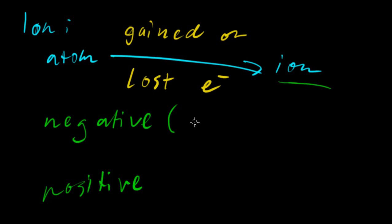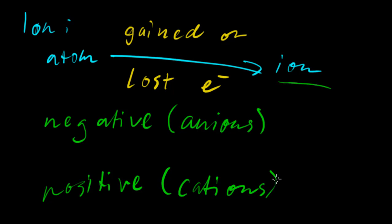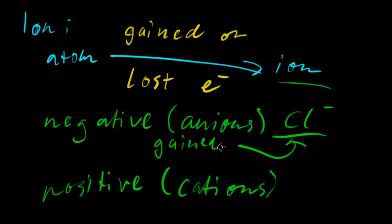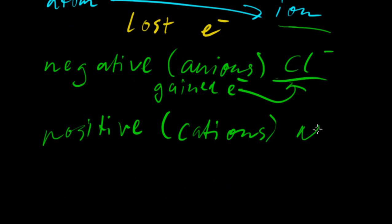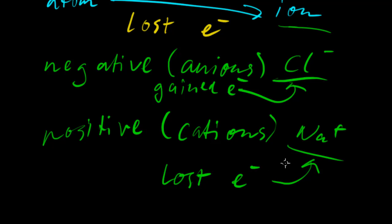There are the negative ions and the positive ions. Negative ions we call anions and positive ions we call cations. An example of a negative ion is Cl- and this has gained an electron, whereas the positive ion, for example, a sodium ion, this has lost an electron. So, I hope you can see the relationship between those.